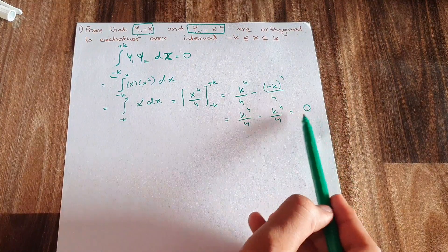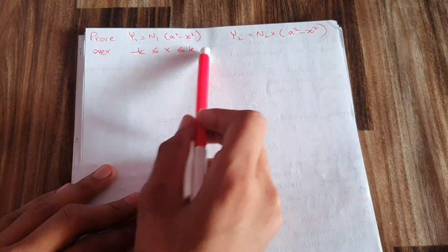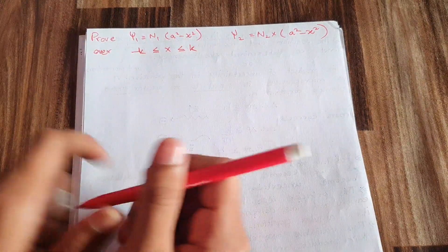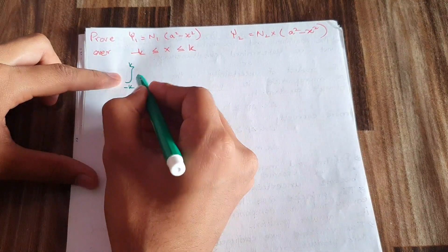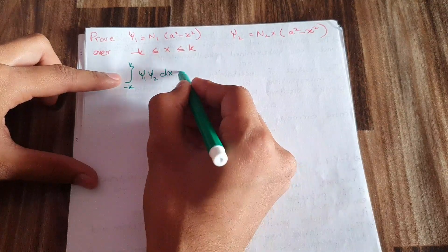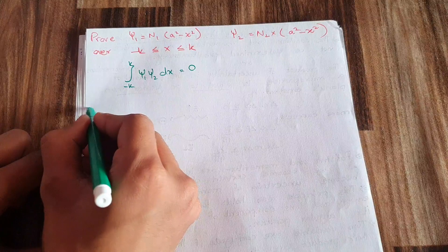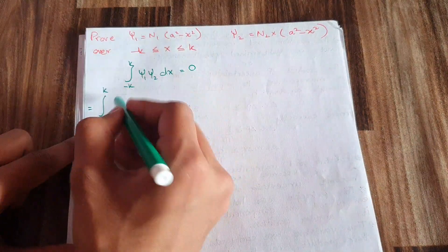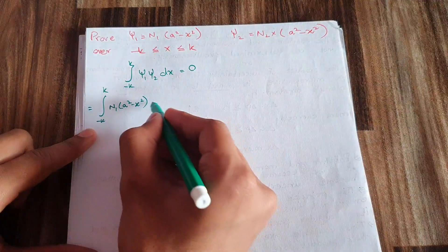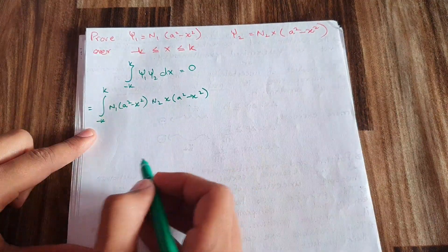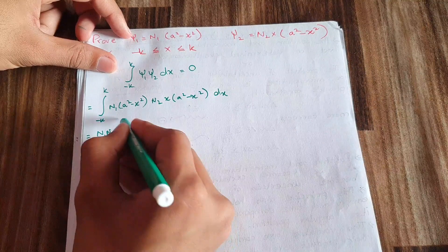For the second example, ψ₁ = N₁(a² − x²) and ψ₂ = N₂·x(a² − x²), over the range −k ≤ x ≤ k. We write the orthogonality condition: the integral from −k to +k of ψ₁ · ψ₂ dx = 0. Plugging in, the left-hand side becomes the integral of N₁(a² − x²) · N₂·x(a² − x²) dx.